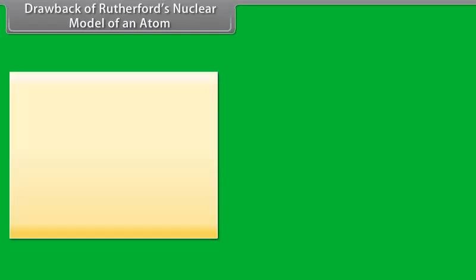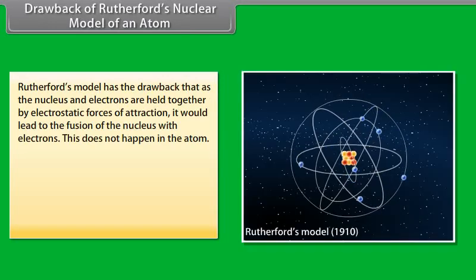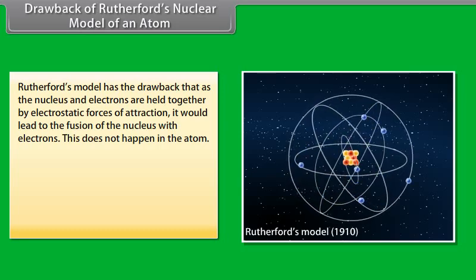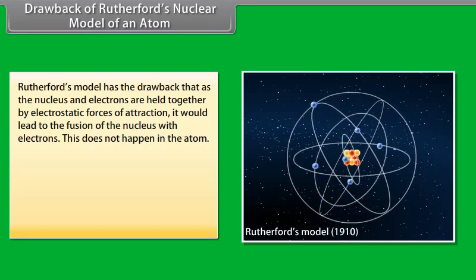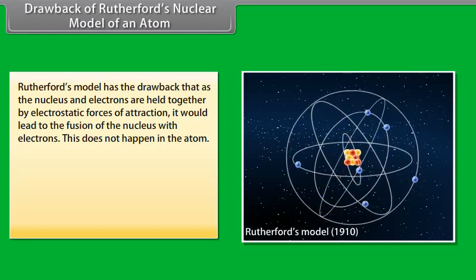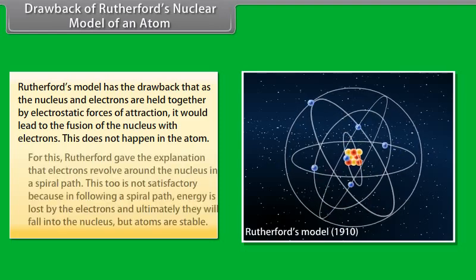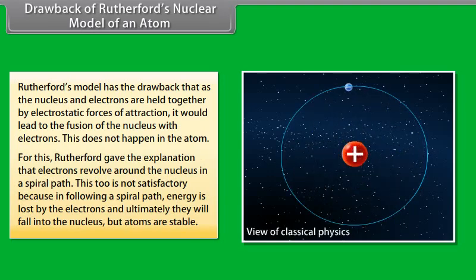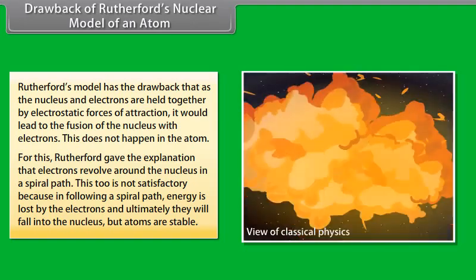Drawback of Rutherford's nuclear model has the drawback that as the nucleus and electrons are held together by electrostatic forces of attraction, it would lead to the fusion of the nucleus with electrons. This does not happen in the atom. For this, Rutherford gave the explanation that electrons revolve around the nucleus in a spiral path. This too is not satisfactory because in following a spiral path, energy is lost by the electrons and ultimately they will fall into the nucleus but atoms are stable.